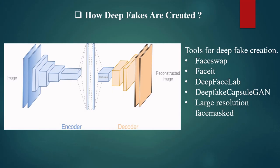How are deepfakes created? They are created using tools like FaceSwap and FaceIt, which use generative adversarial networks (GANs) and autoencoders. These tools split the video into frames, pass them to an autoencoder which swaps the target image onto the source image, and the decoder generates the manipulated deepfake video. The quality can be enhanced by removing leftover traces, making deepfakes very realistic. However, these traces remain, and we use them as key features in our model to detect whether a video is a deepfake.